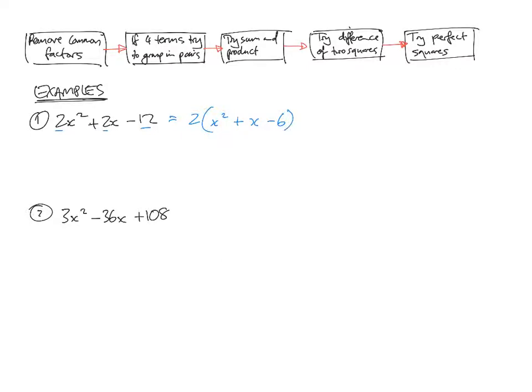Now we've got a quadratic, a trinomial here, quadratic trinomial, because there's three numbers there, that we can try to factorize. If there's four terms, try to group it in pairs. There's not four terms there, there's three. So try sum and product.